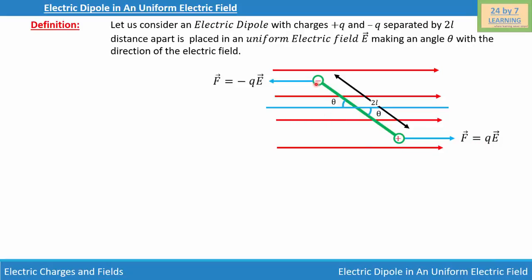Now let's drop a perpendicular from here onto the line that joins the positive charge, giving us a right triangle. This right triangle has angle theta — the angle between the direction of the electric field and the electric dipole is theta. This angle is also theta because they are alternate angles.